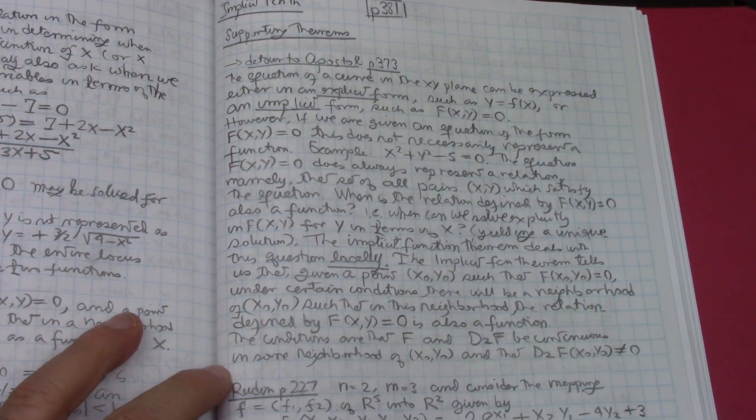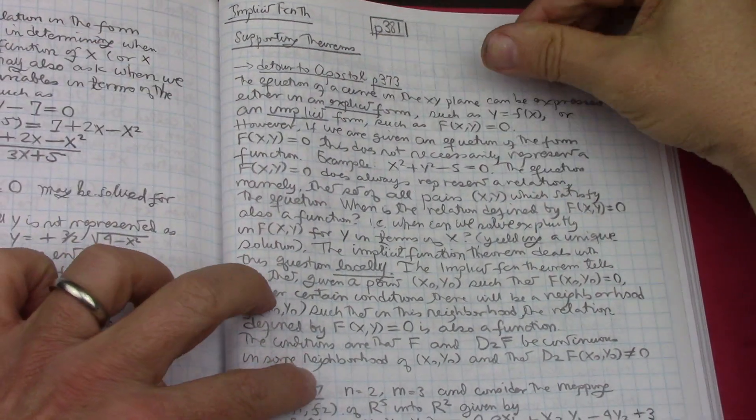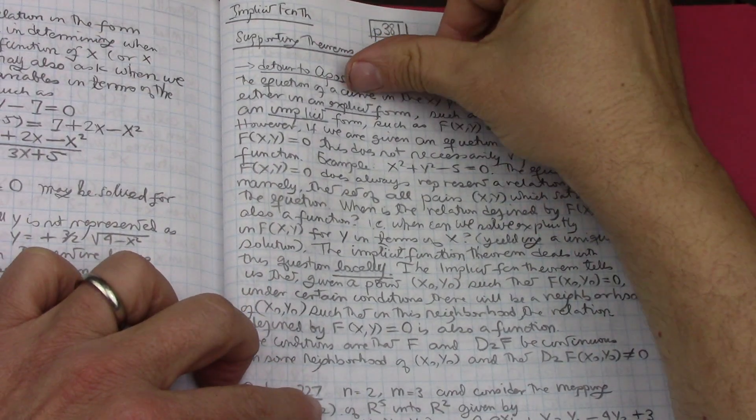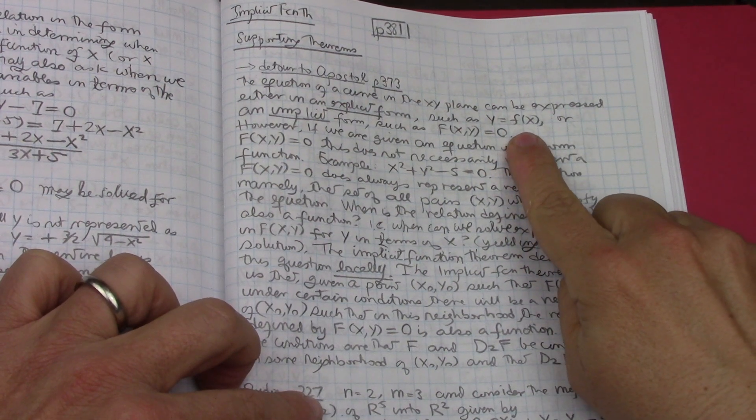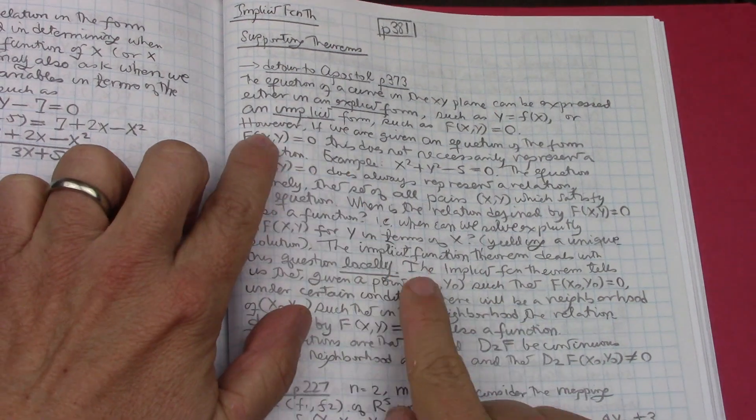What does Apostol say about the implicit function theorem? He says the equation of a curve in the xy plane can be expressed either in an explicit form such as y equals f(x), or an implicit form.